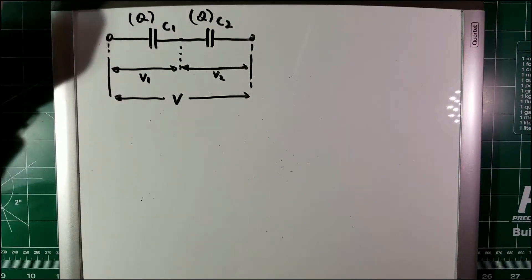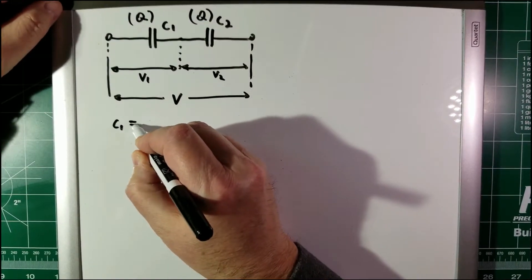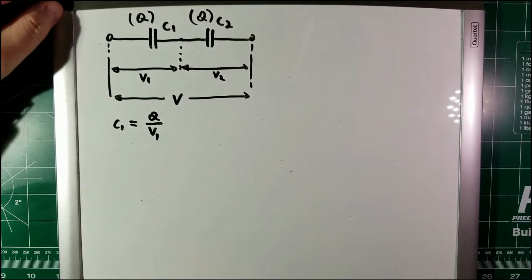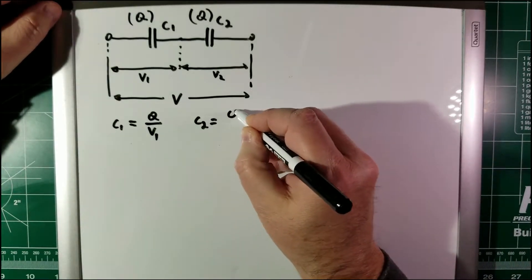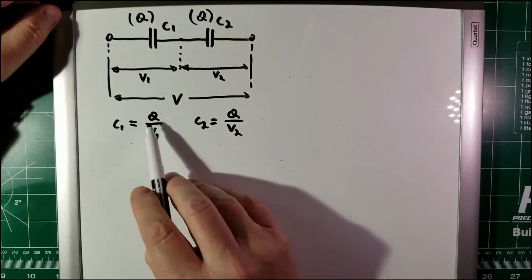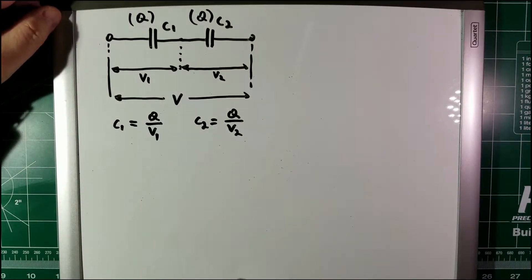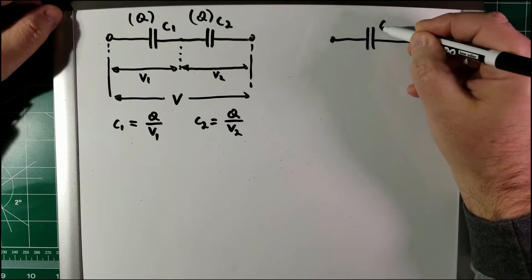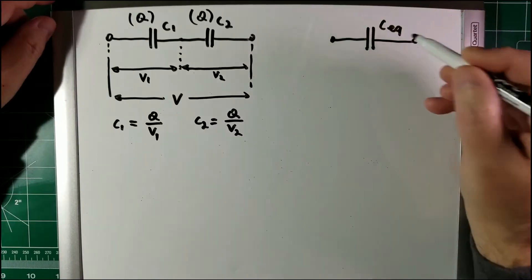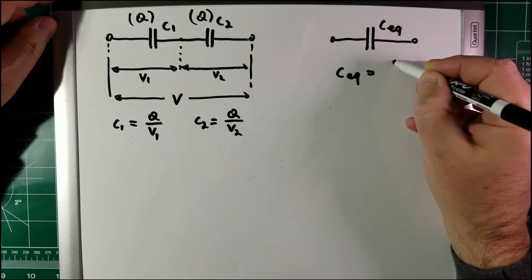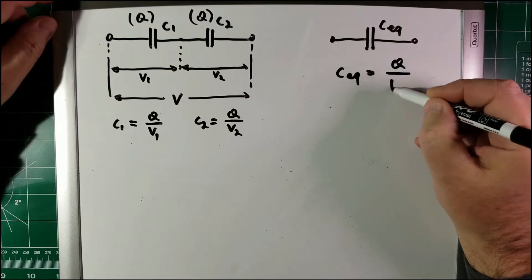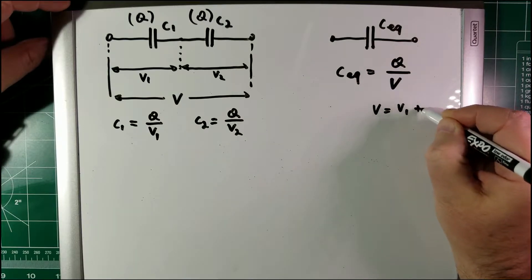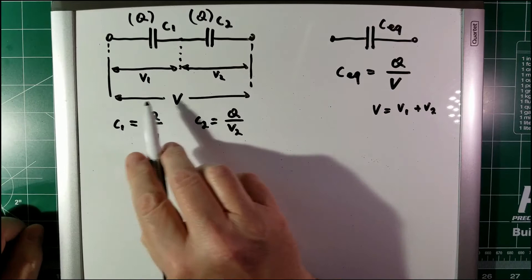So for capacitor C1 we can write that C1 equals Q divided by V1, and similarly C2 equals Q divided by V2, where Q is the same for both. If we consider the equivalent capacitor, C_equivalent will be Q divided by the whole V, where V equals V1 plus V2 from this circuit.